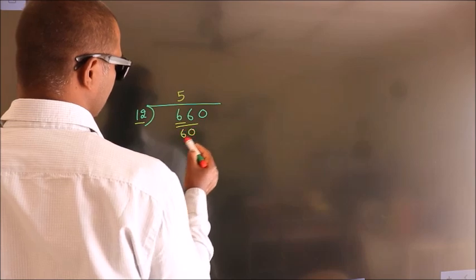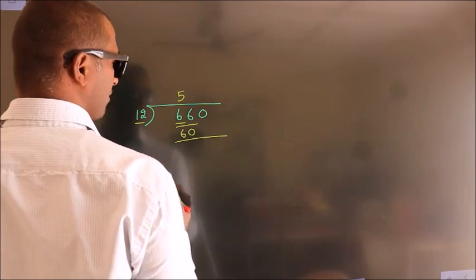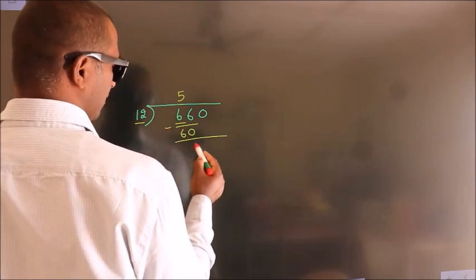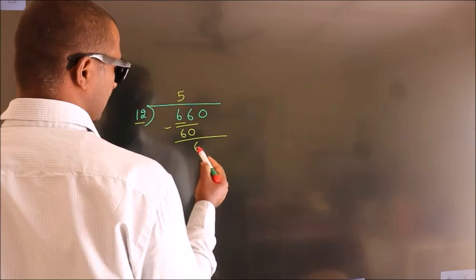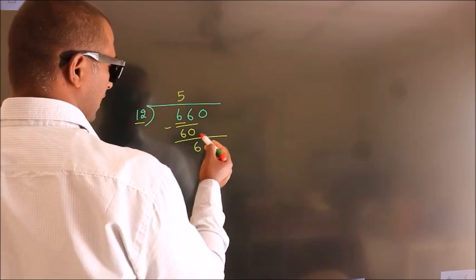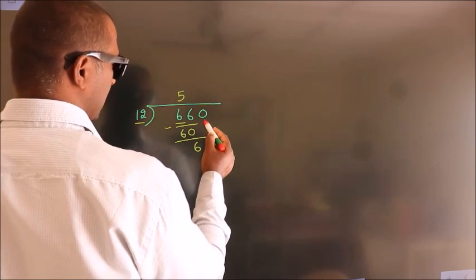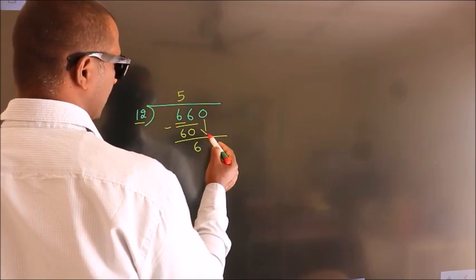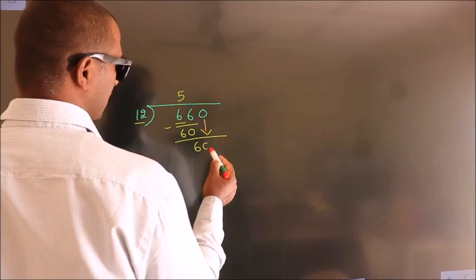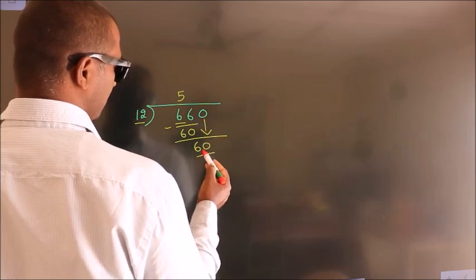which is 60. Now we subtract, and we get 6. After this, bring down the beside number. So 0 comes down, giving us 60.